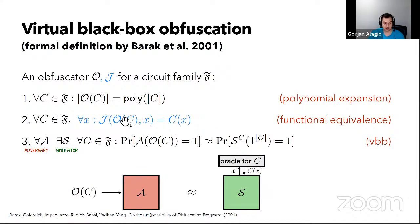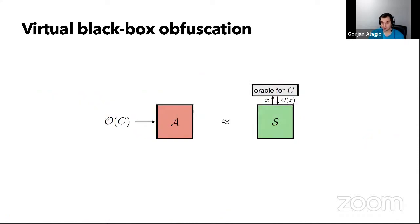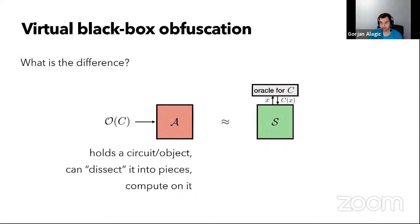In our case, the obfuscated object will be a quantum state, so we'll also need some public algorithm which tells us how to use the state to evaluate the program. The comparison we're making is between two very different things. On the left-hand side, the adversary is able to get the obfuscated circuit as input, study it, take it apart, do all sorts of interesting things. In the other case, the simulator is only able to ask it questions. An obfuscator that makes these two things equivalent is a pretty strong object.